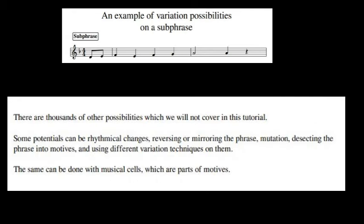There are thousands of other possibilities, which we will not cover in this tutorial, as we just don't have enough time. Now, some potentials that you can use, and that we will dive into it in the next tutorials, can be rhythmical changes, reversing or mirroring the phrase, mutations, dissecting the phrase into motifs, and using different variation techniques on them. The same can be done with musical cells, which are part of motifs.